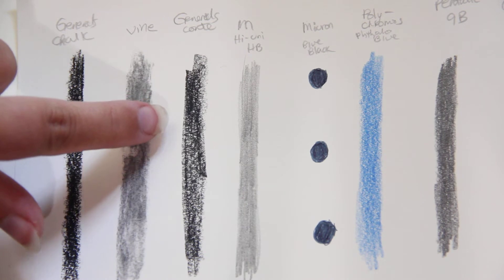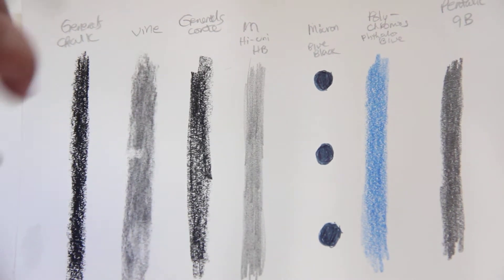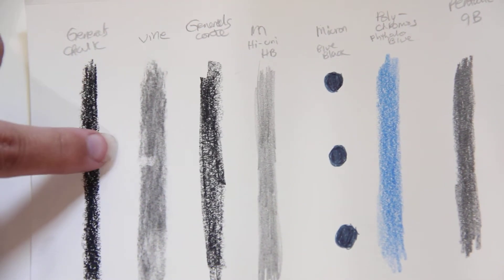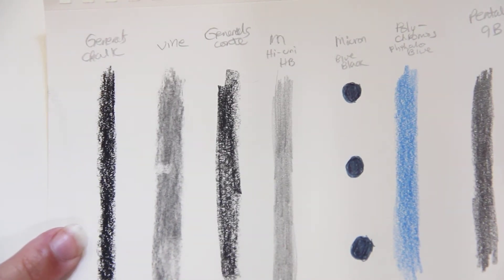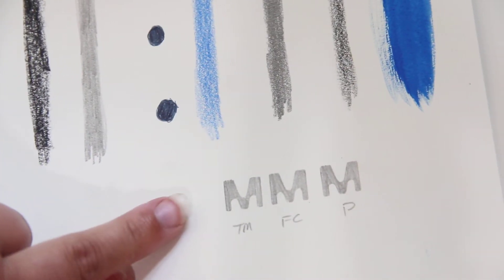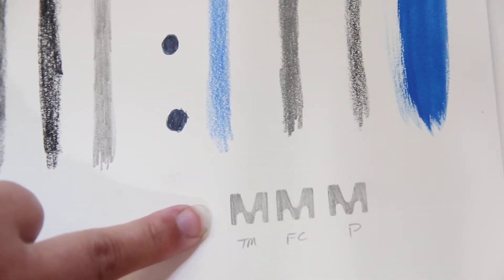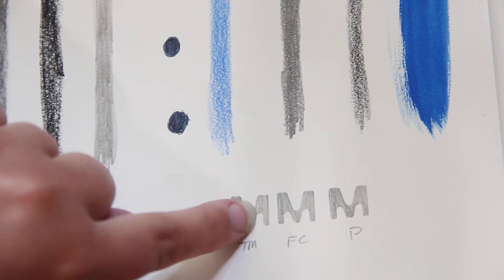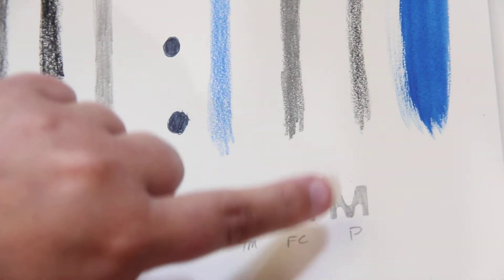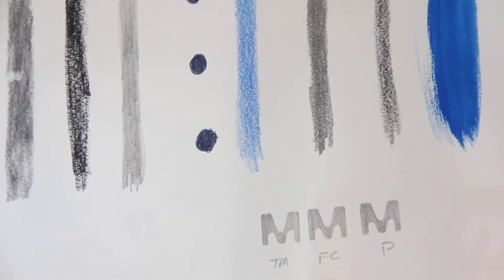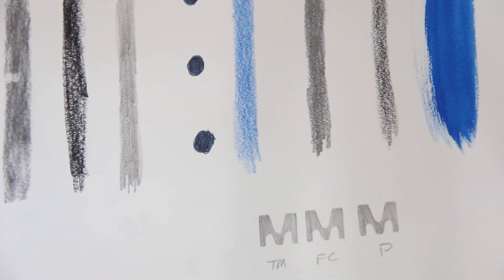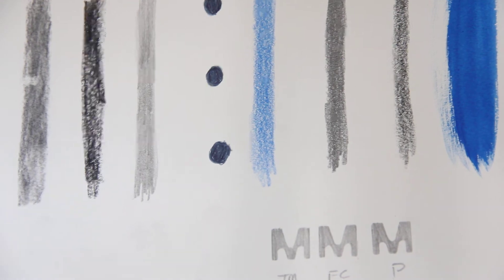Here is a General's Conte charcoal stick, here is a vine charcoal stick, and here is a General's chalk pencil. And then at the bottom I have three M's and I want to see if they can do a larger chunk altogether. And I used just a stencil from one of my kids' rulers.